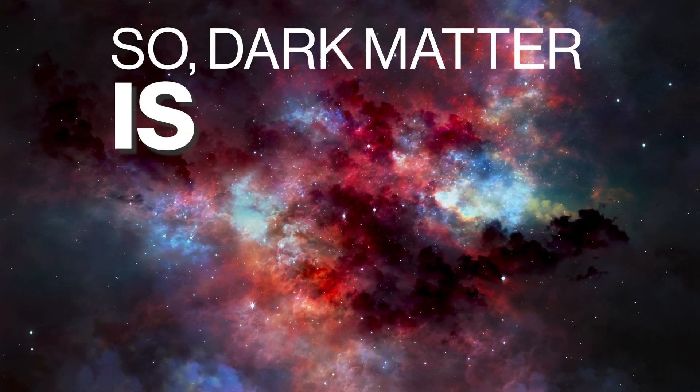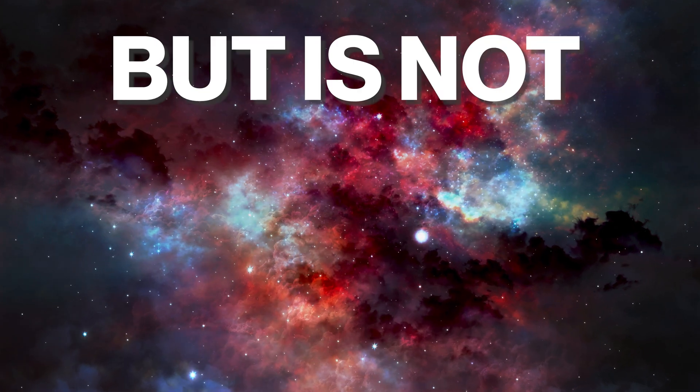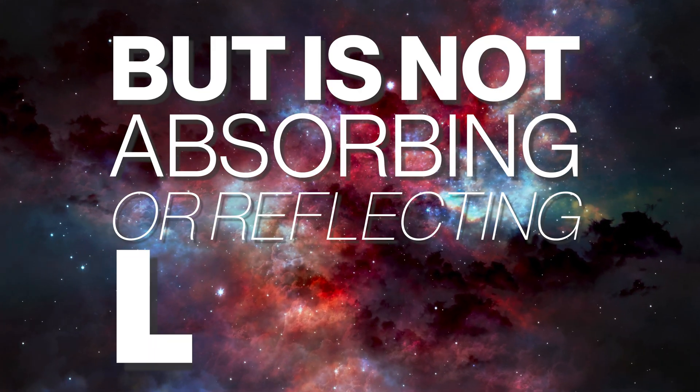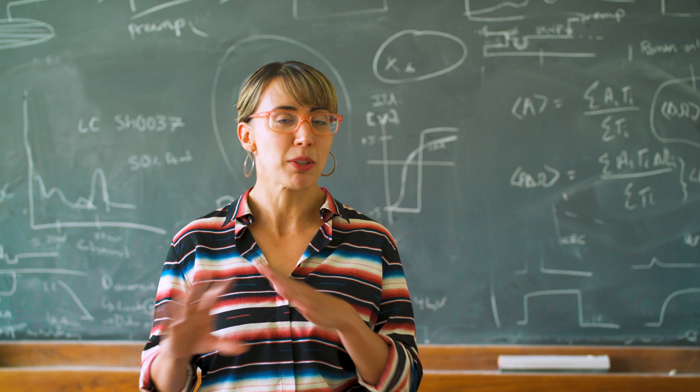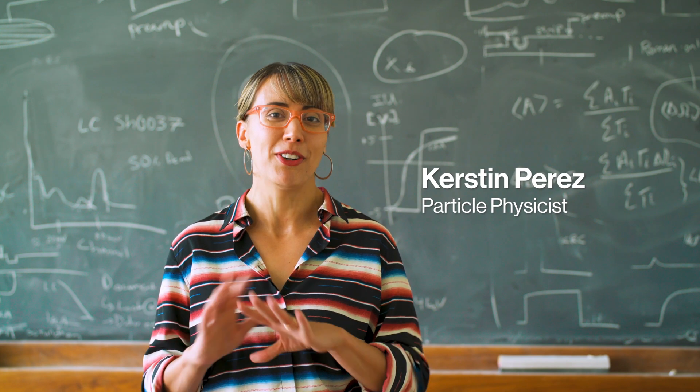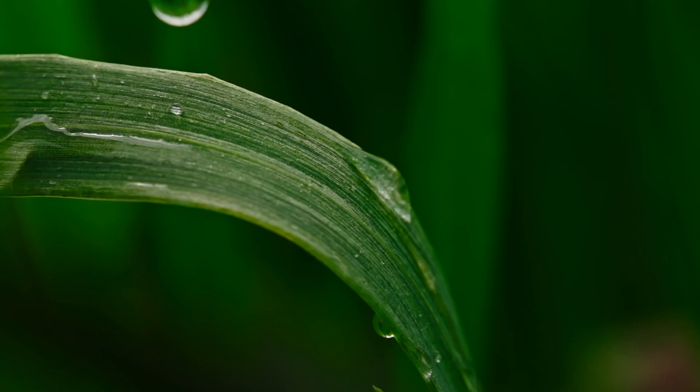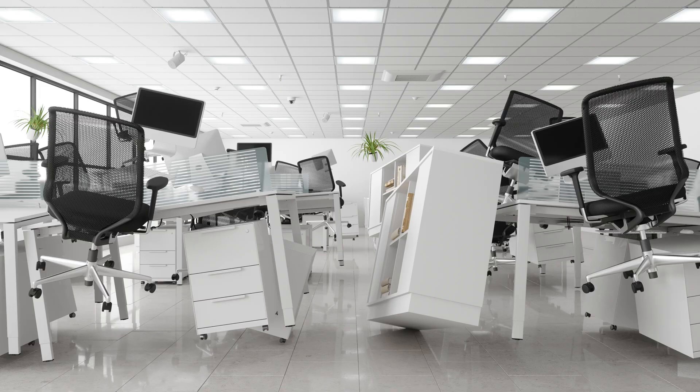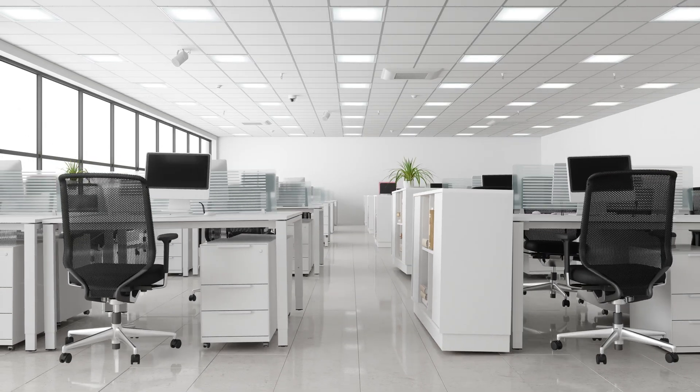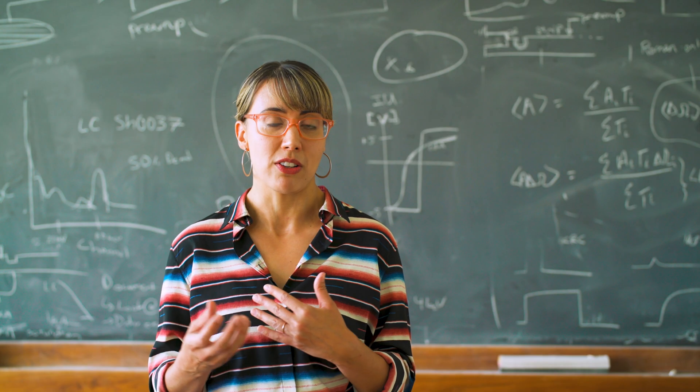So dark matter is matter that is creating gravity in the universe, but is not absorbing or reflecting light. So I need to break that apart a little bit. So first of all, what's gravity? In essence, gravity is what holds the universe together. Gravity holds us down on the earth, holds the earth in orbit around the sun, and it holds the sun and other stars orbiting around in galaxies.